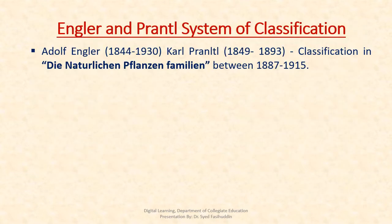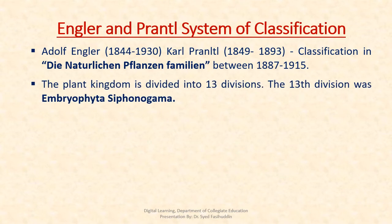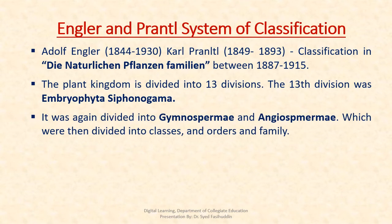Adolf Engler and Carl Prantl proposed a system of classification in their classical work Die Natürlichen Pflanzenfamilien. The plant kingdom is divided into 13 divisions. The 13th division was called Embryophyta Siphonogamma, which was again divided into Gymnospermae and Angiospermae, which were then divided into classes, classes into orders, and orders into families.